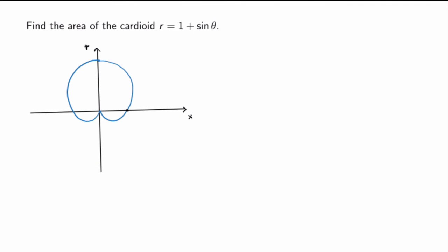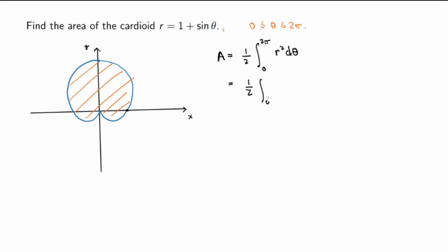Let's apply this to the cardioid. Suppose we want to calculate the area enclosed by the cardioid r equals 1 plus sinθ, with theta going from 0 to 2π to trace the whole curve. Using the formula, the area equals one half times the integral from 0 to 2π of r²·dθ, which becomes one half times the integral from 0 to 2π of (1 + sinθ)²·dθ. Skipping the integration steps — which are straightforward or can be verified with Wolfram Alpha — the answer is 3π/2. So that's it for today.